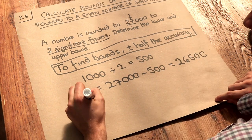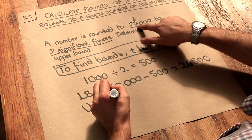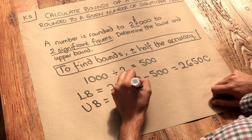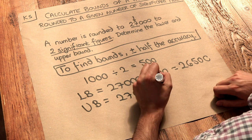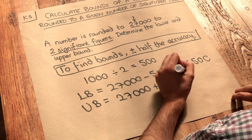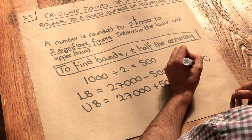And if you would find the upper bound, we do the original number, the 27,000, and we add half the accuracy, so 500, and that gives us 27,500.